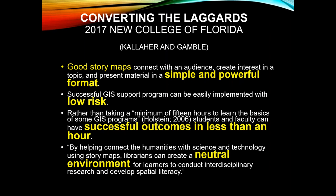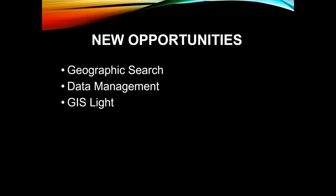How do we convert the laggards? There's an interesting article by Callagher and Gamble in 2017 from New College of Florida. Story maps are a simple and powerful format. They present an opportunity for a library — very low risk, with successful outcomes in less than an hour. And a lot of people see getting GIS services from a library as a very neutral, endearing, friendly environment.